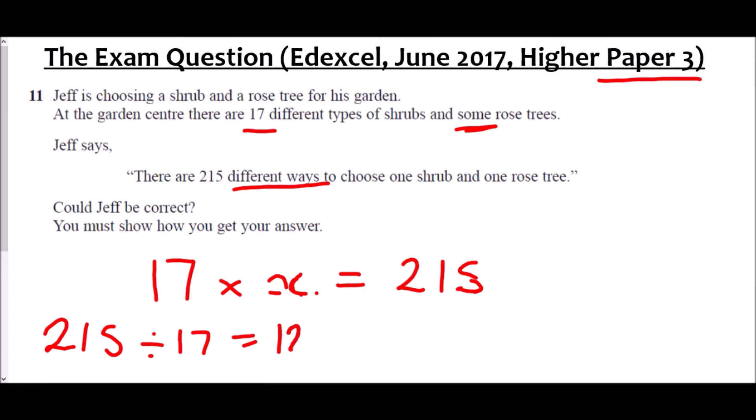Now, the question is, could Jeff be correct? Well, this all stems from this result. This result must be an integer if Jeff is correct, because we need to have a number of rose trees that we can actually count. We aren't going to buy 12.6 rose trees or be able to choose from 12.6 rose trees. Therefore, Jeff is not correct.